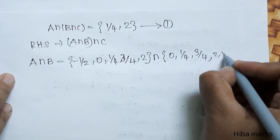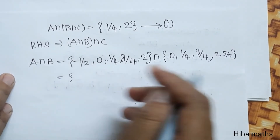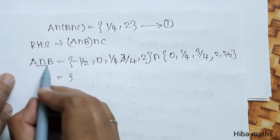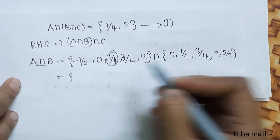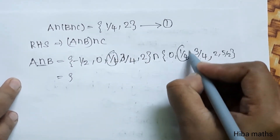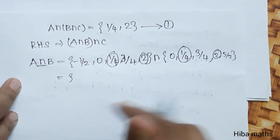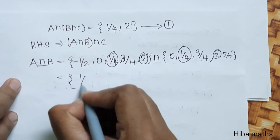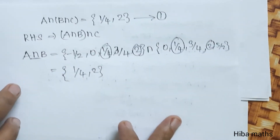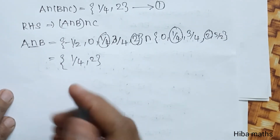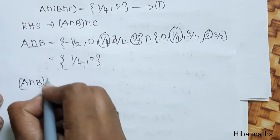Including 5/2 — checking common values: 1/4 and 2 are common. So A intersection B = {1/4, 2}. This is the right-hand side first result.